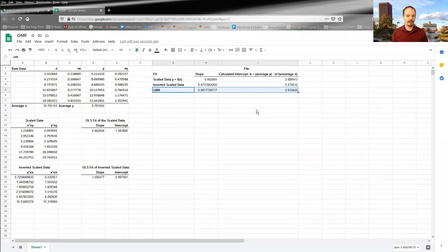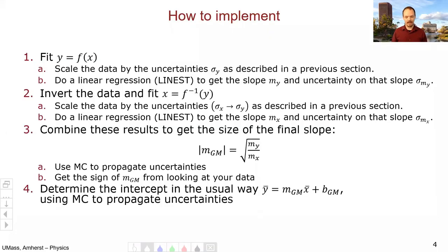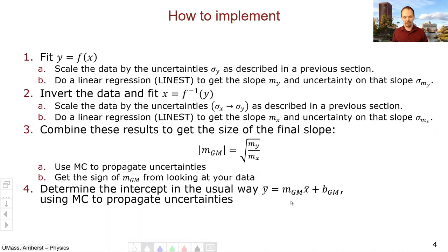Here we've ignored the uncertainties, but how would we handle them? We propagate the uncertainties using Monte Carlo in the usual way. Both m_y and m_x will have uncertainties, and you can do around a thousand trials of Monte Carlo to figure out the uncertainty on the GMR slope. You'll also notice this is an absolute value — to get the sign, look at your plot: if it slopes up, the sign is positive; if it slopes down, the sign is negative. For the uncertainty on the intercept, you now have an uncertainty on your slope and can propagate it through to get the uncertainty on b, without needing to worry about the uncertainty on x-bar and y-bar.